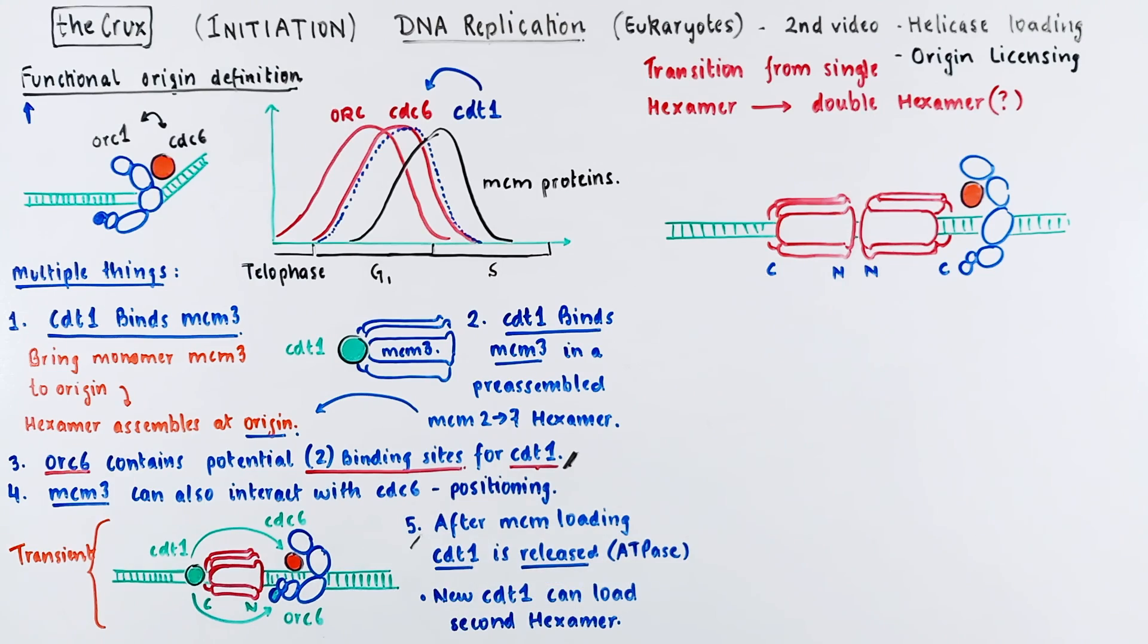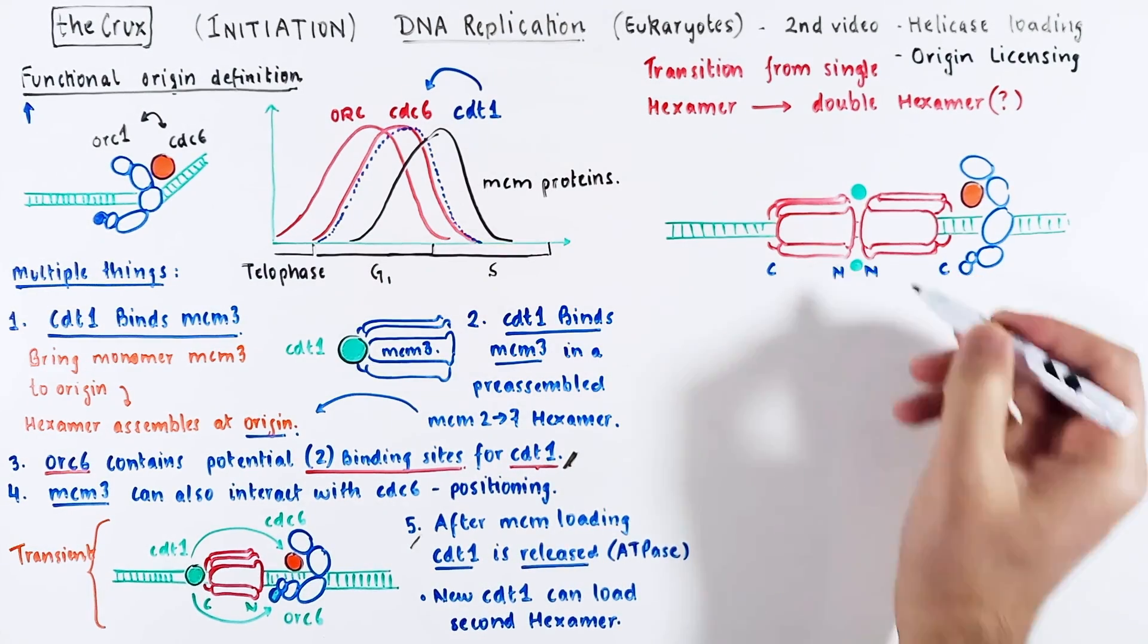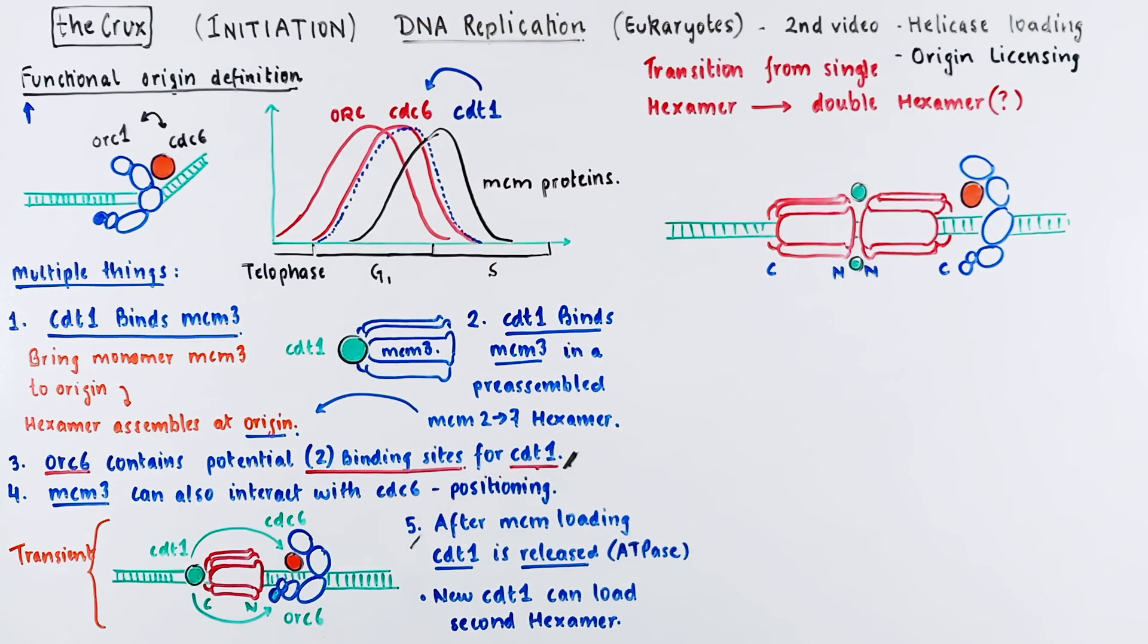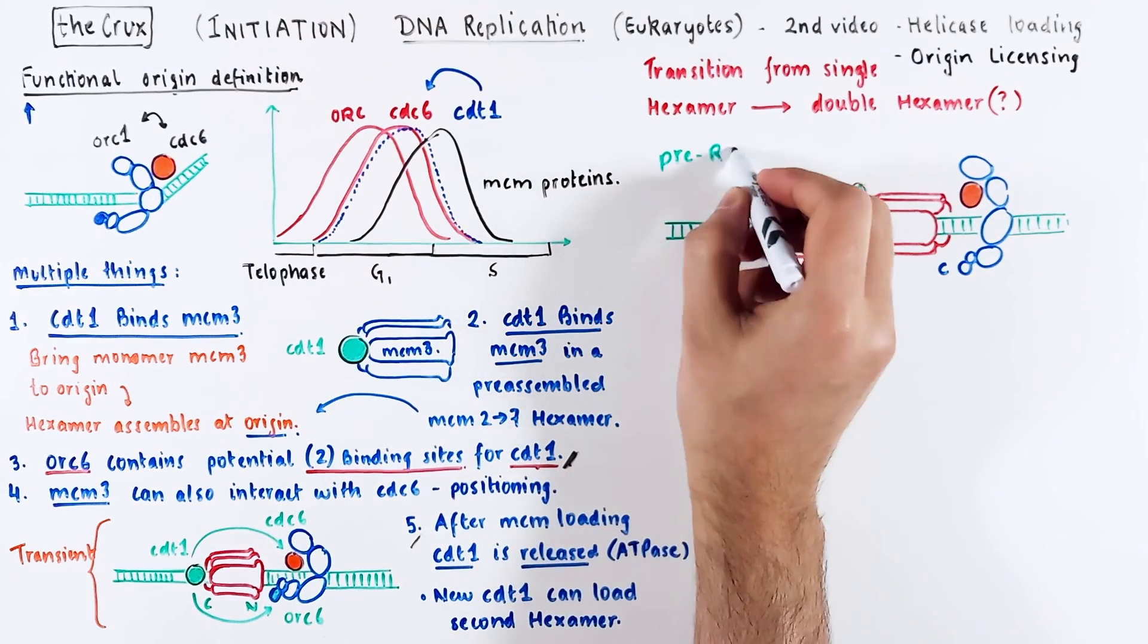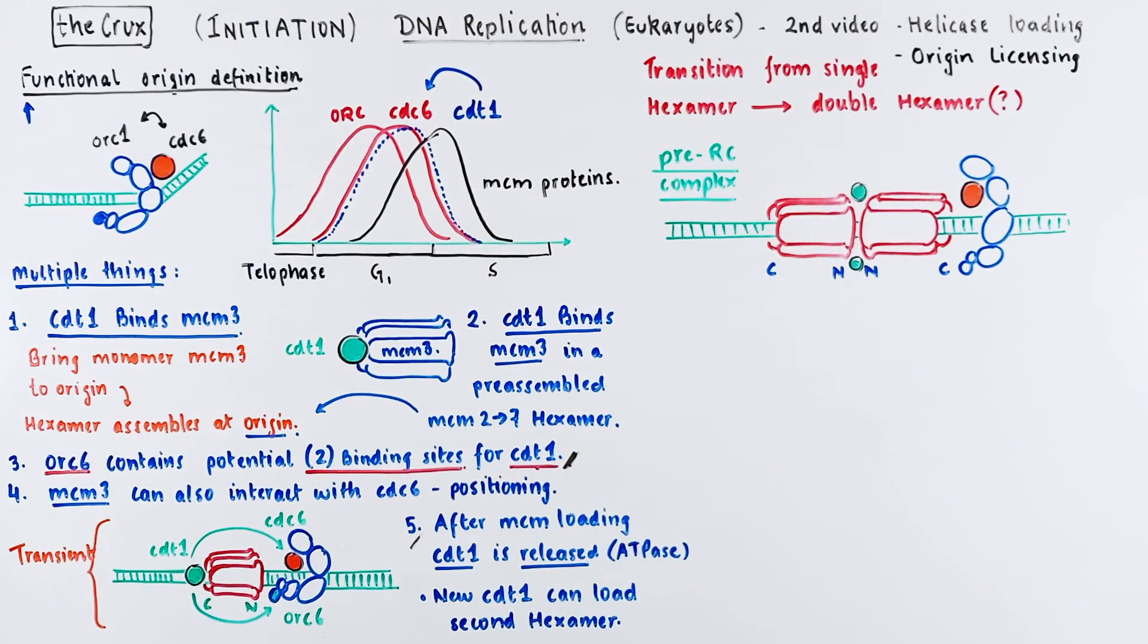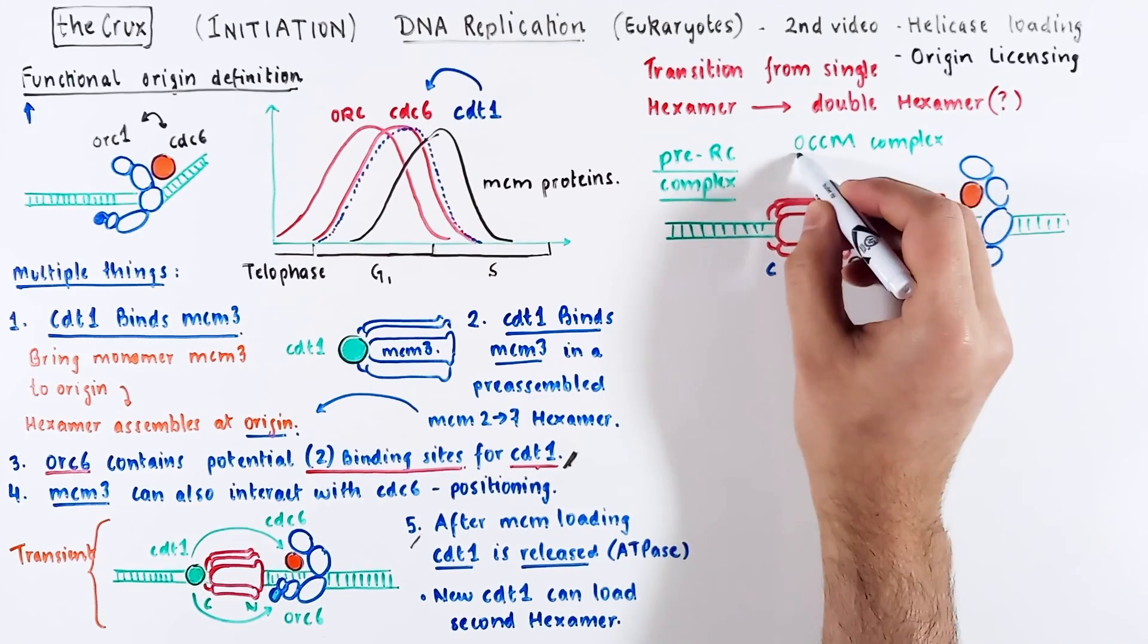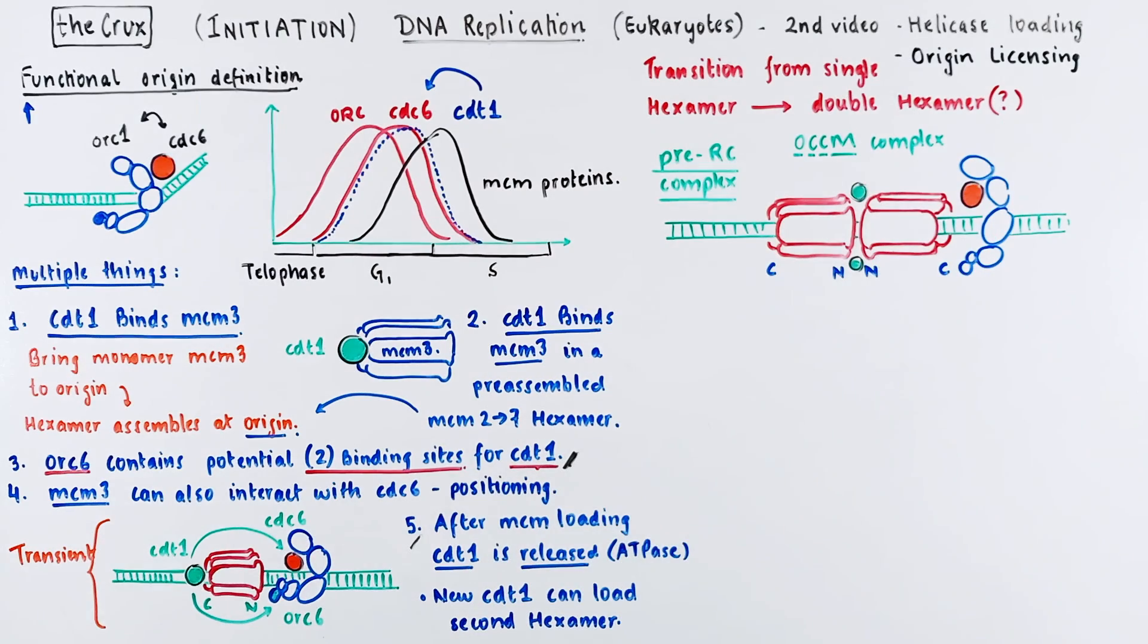Again, given point 3 or point 5 scenario, you either have one or two CDT-1 proteins associated with this complex. This is what we call the pre-replicative complex, sometimes also referred to as the OCCM complex. O is ORC, C is CDC-6, another C is CDT-1, and M is the MCM proteins.